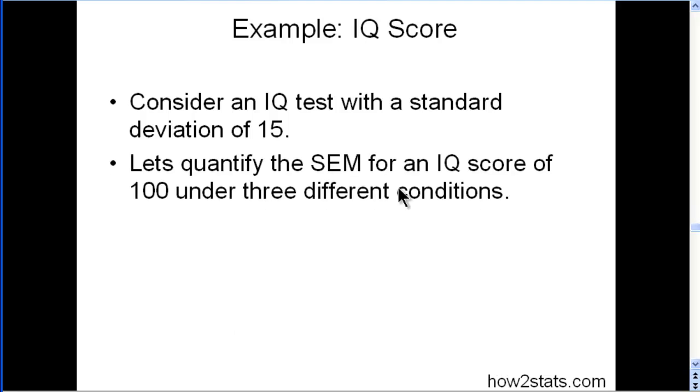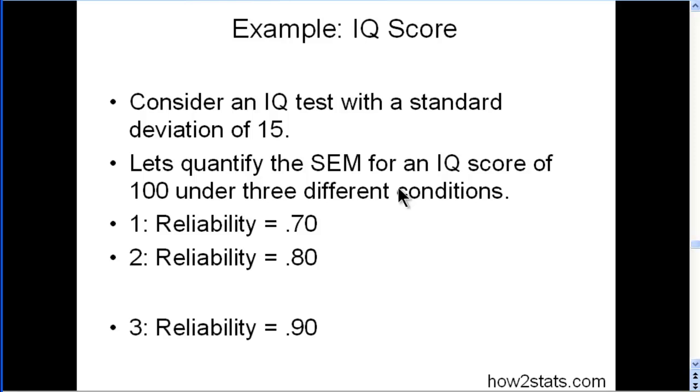Let's quantify the standard error of measurement for an IQ score of 100 under three different conditions. Reliability equal to 0.70, reliability equal to 0.80, and reliability of 0.90.